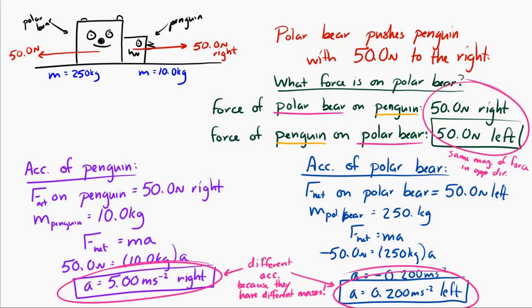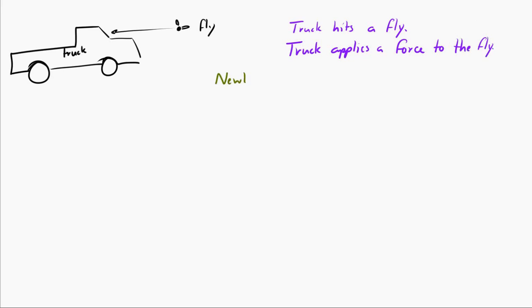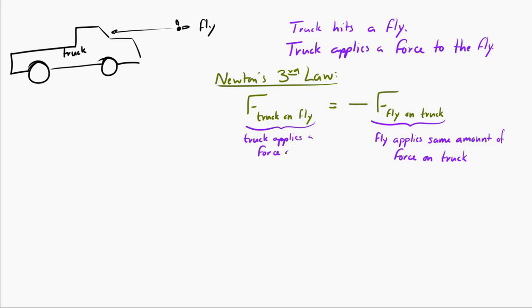Let's look at another example: a truck going along hits a fly — the fly hits the windshield of the truck. The truck definitely applies a force on the fly, and Newton's third law says the force the fly applies on the truck must be the same in magnitude and opposite in direction. That might sound odd — the fly applying the same amount of force to the truck that the truck applies to the fly. The fly gets squished, but the truck acts like it didn't feel a force at all. But it did — the same amount of force in the opposite direction.